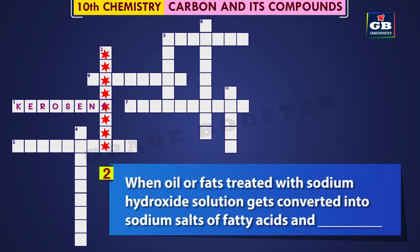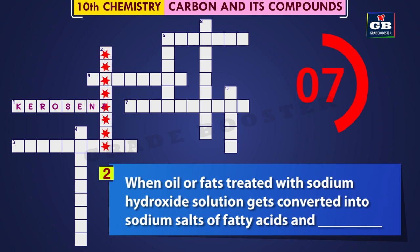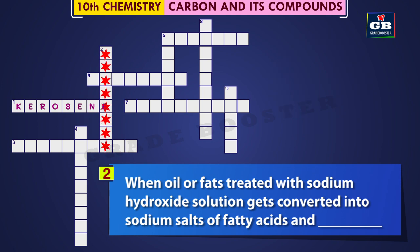2 Down: When oil or fats are treated with sodium hydroxide solution, it gets converted into sodium salts of fatty acids and dash. The answer is glycerol. When oil or fats are treated with sodium hydroxide solution, it gets converted into sodium salts of fatty acids and glycerol.